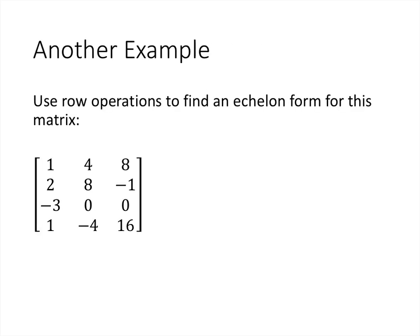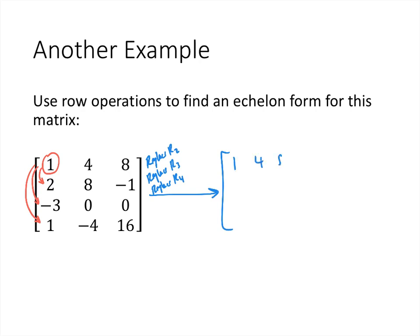Let's do another example. The first column is not all zeros, so it is a pivot column and the first position is a pivot. The number there is not zero, so we don't need to do any swapping. Now we'll do three replacement operations simultaneously to change all the numbers underneath that leading 1 to zeros — one for row 2, one for row 3, and one for row 4. Row 1 will stay as 1, 4, 8, and we want zeros in that first column for all rows below.